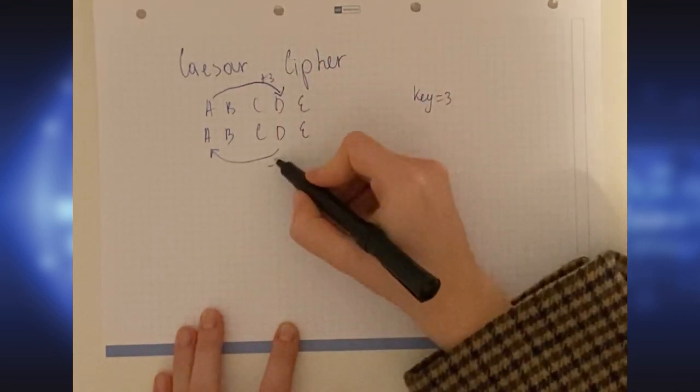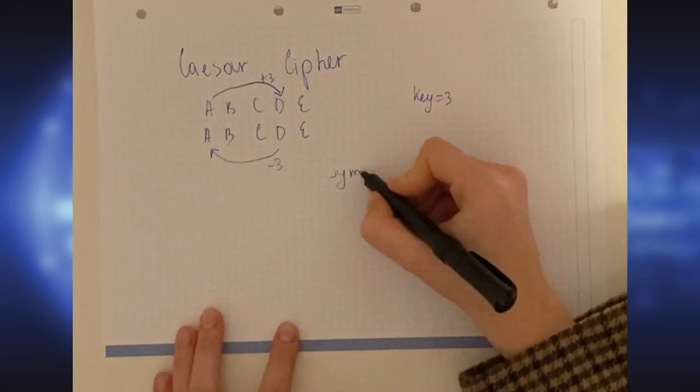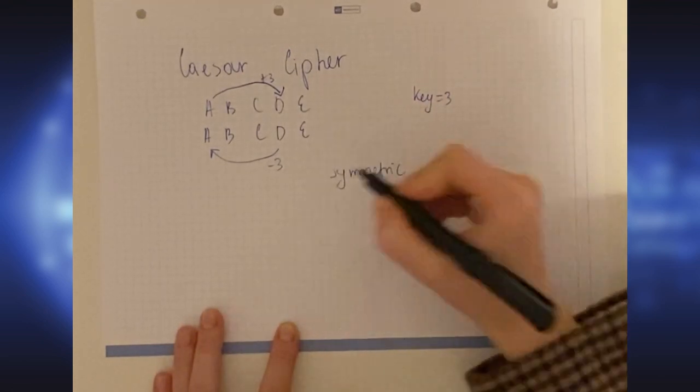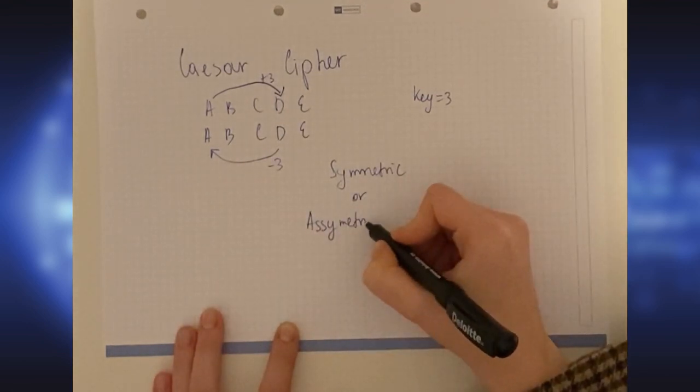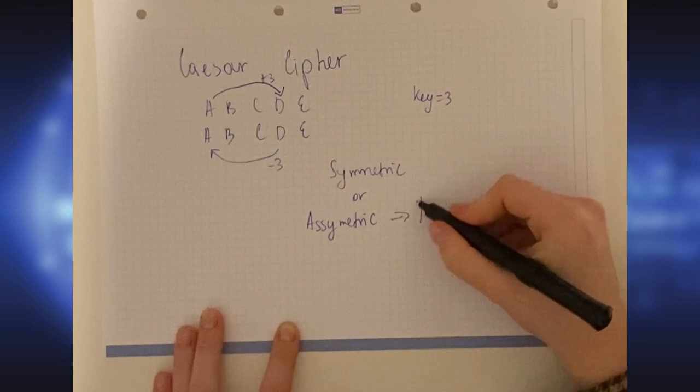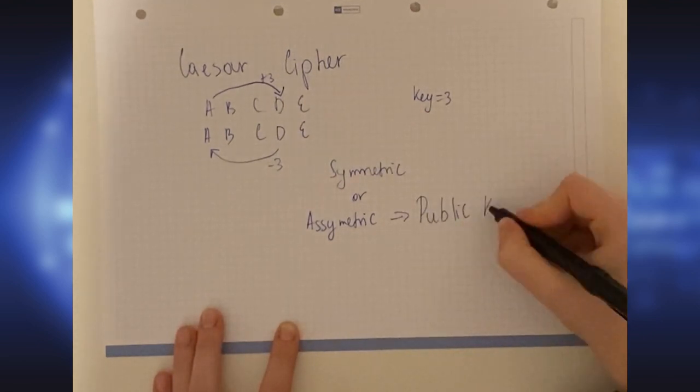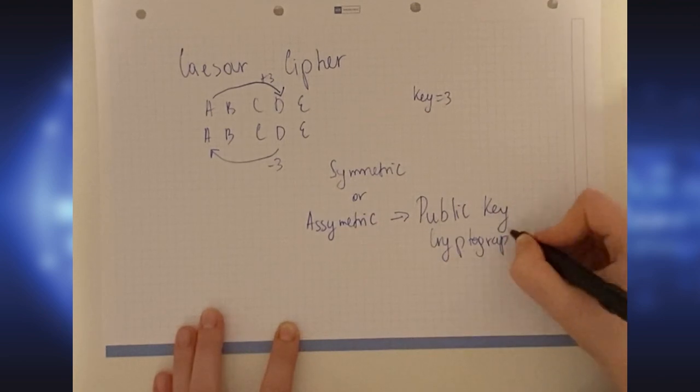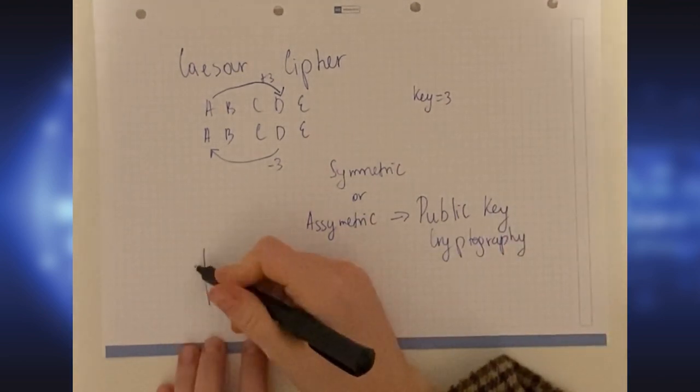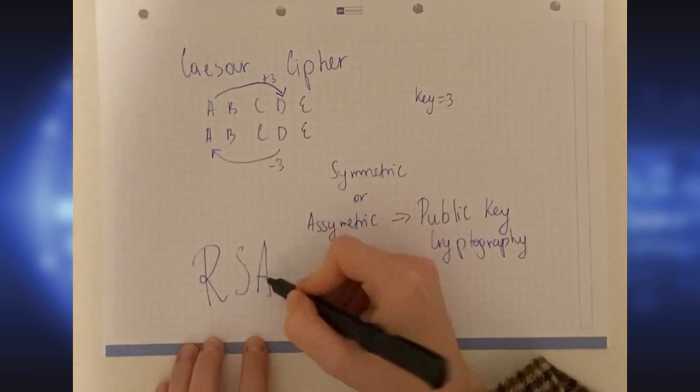This is a case of symmetric cryptography, where the key and methodology used for decoding and encoding are the same. But there is also asymmetric, where the key or methodology is different. For example, public key cryptography uses both a public key and a secret key, so that no one without knowing the secret key can decode it. The most famous example is RSA.